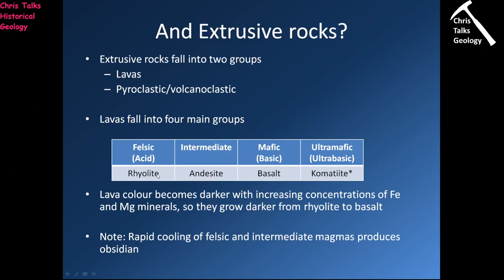At the felsic end of the scale, we have lots of sodium, potassium, aluminum, and silicon, so we end up forming quite light-coloured minerals. As we go from felsic to ultramafic, there is a steady darkening of the colour of the rock.